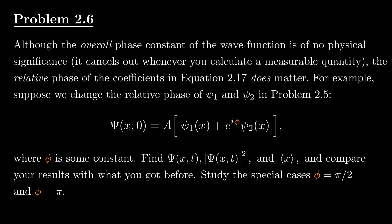It affects the probability distribution and even the expectation value of position. In other words, quantum interference isn't just about which states we combine — it's also about how we combine them.